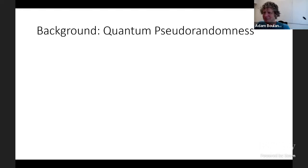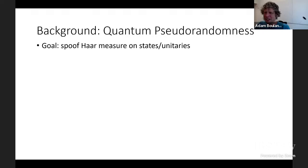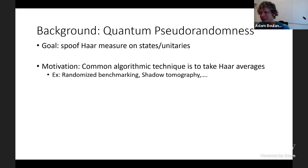To understand our construction, it's helpful to start with background on quantum pseudo-randomness. A common goal in quantum algorithms is to spoof the Haar measure on states or unitaries—to create some ensemble indistinguishable in some ways from the Haar measure.